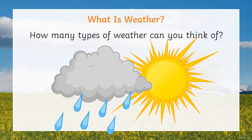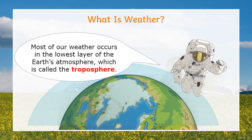What is weather? How many types of weather can you think of? You can think about sunny weather and rainy weather. In other countries, you can think about snow. Most of our weather occurs in the lowest layer of the atmosphere, which is called the troposphere — the layer just above us on Earth.